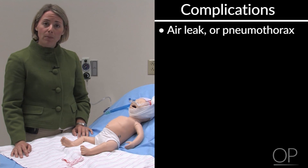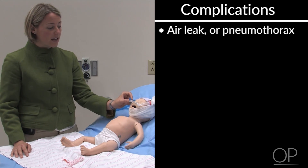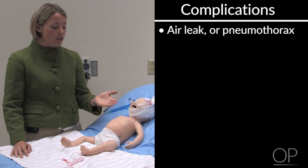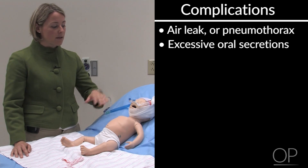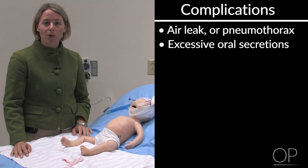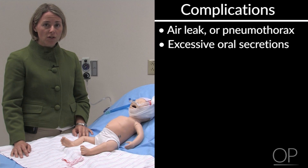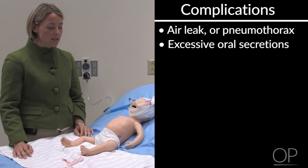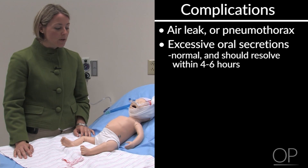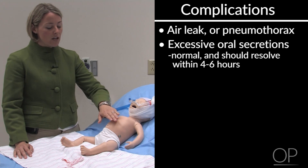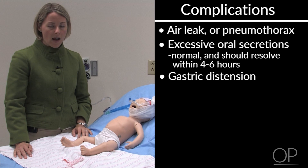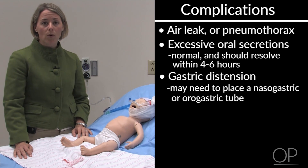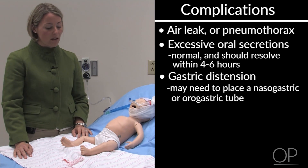Additionally, when you put a patient on nasal cannula CPAP for the first time, the baby may develop a lot of excessive oral secretions. That's normal, as positive airway pressure builds in the oral cavity and secretions are forced out of the mouth. You can reassure parents and patients that this is normal and should go away after four to six hours. Finally, you may notice gastric distension, and you may need to place a nasogastric or orogastric tube to alleviate that.